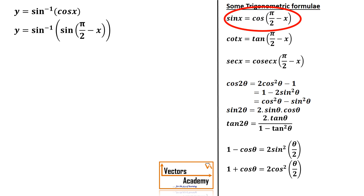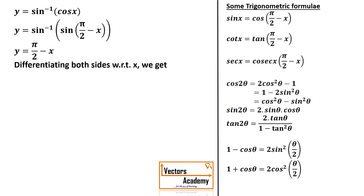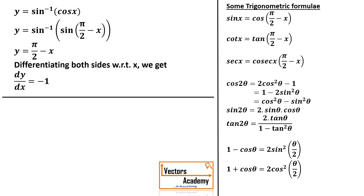Hence I can write the question as sine inverse of sine(π/2 minus x). Now sine and sine inverse get cancelled and I'll be left with π/2 minus x. Differentiating both sides, π/2 is a constant term and the derivative of a constant is always 0, hence the answer will be minus 1.